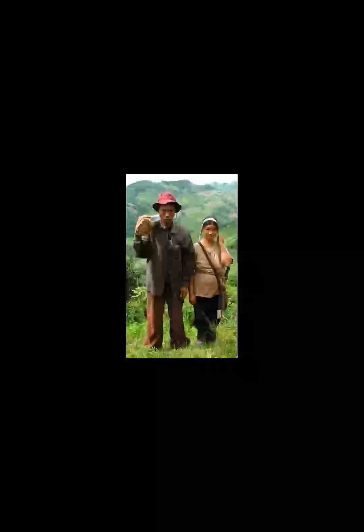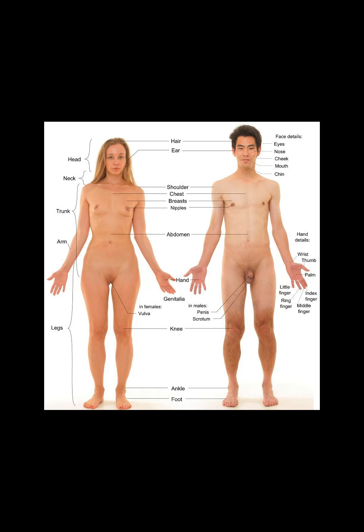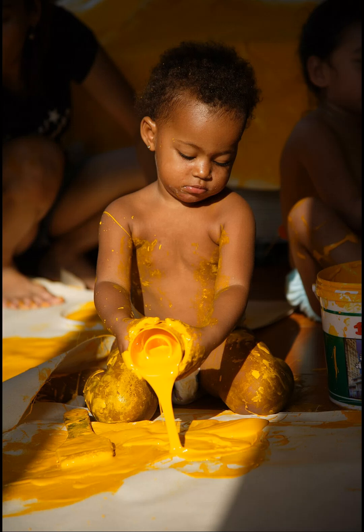Like most animals, humans are a diploid eukaryotic species. Each somatic cell has two sets of 23 chromosomes, each set received from one parent. Gametes have only one set of chromosomes, which is a mixture of the two parental sets. Among the 23 pairs of chromosomes, there are 22 pairs of autosomes and one pair of sex chromosomes. Like other mammals, humans have an XY sex determination system, so that females have the sex chromosomes XX and males have XY.